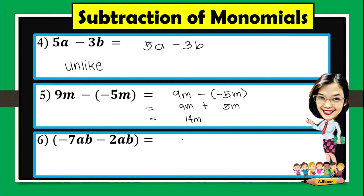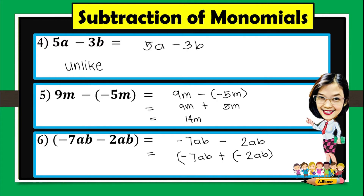Number 6: negative 7ab minus 2ab. Find the opposite of 2ab — the opposite will be negative 2ab, then proceed to addition. Simply copy negative 7ab. They are both negative now, which means we just combine negative 7 and negative 2, so we have negative 9ab.